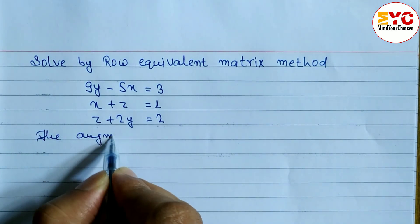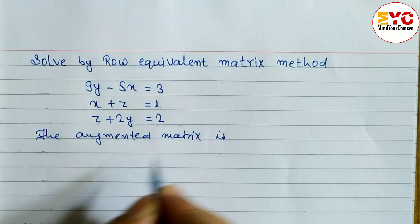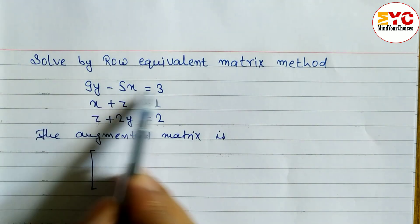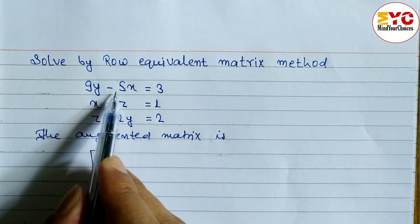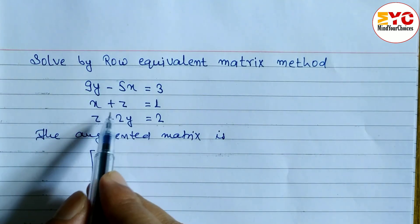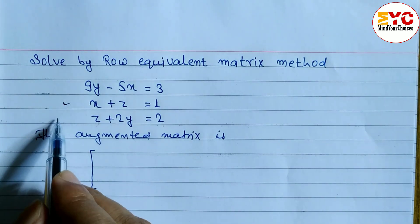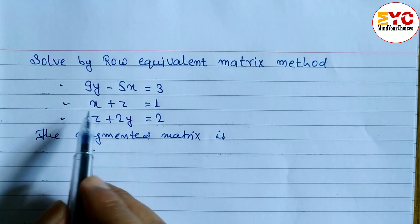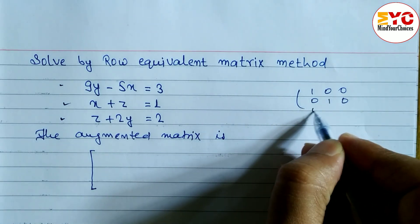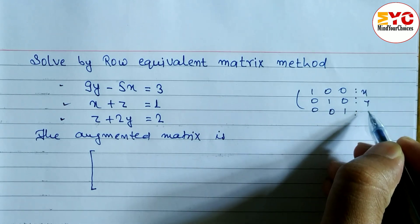The augmented matrix is formed by taking the coefficients of x, y, and z. We always have to convert the matrix into the identity form: 1, 0, 0 / 0, 1, 0 / 0, 0, 1. From that we get the values of x, y, and z.